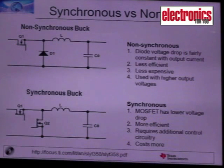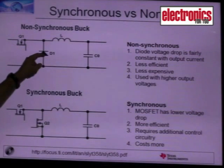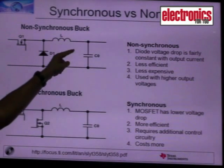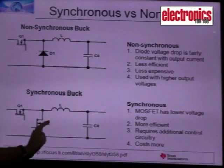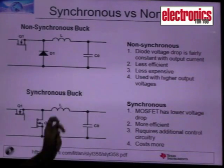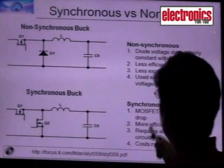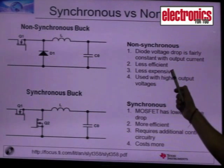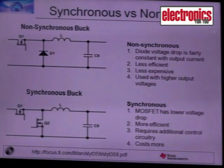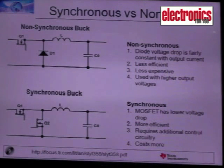When the main MOSFET or switch is off, the current conducts through the diode instead of a MOSFET. The advantages of non-synchronous converters are that they are less expensive and easier to implement, but they have losses in the diodes.